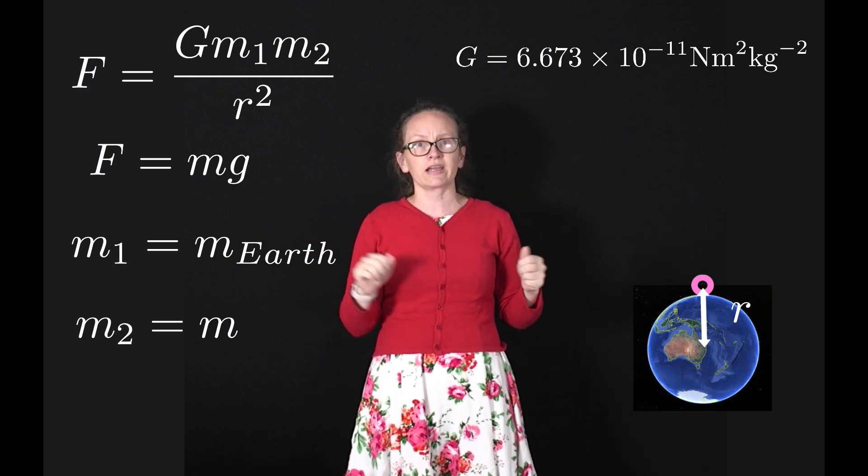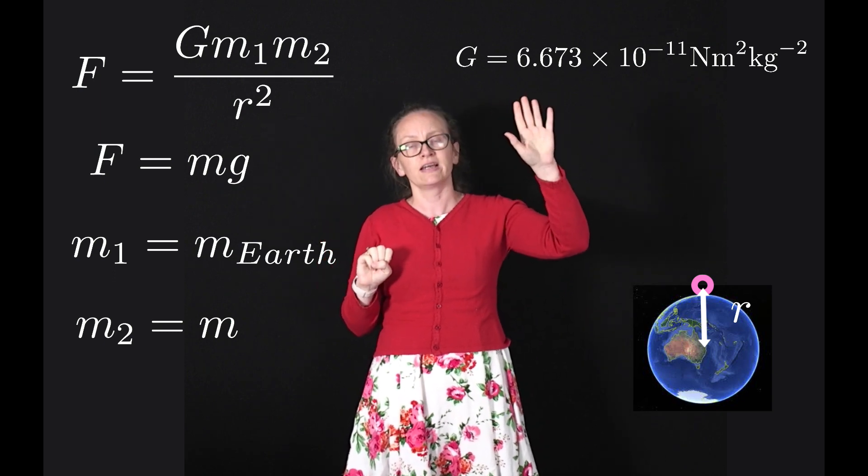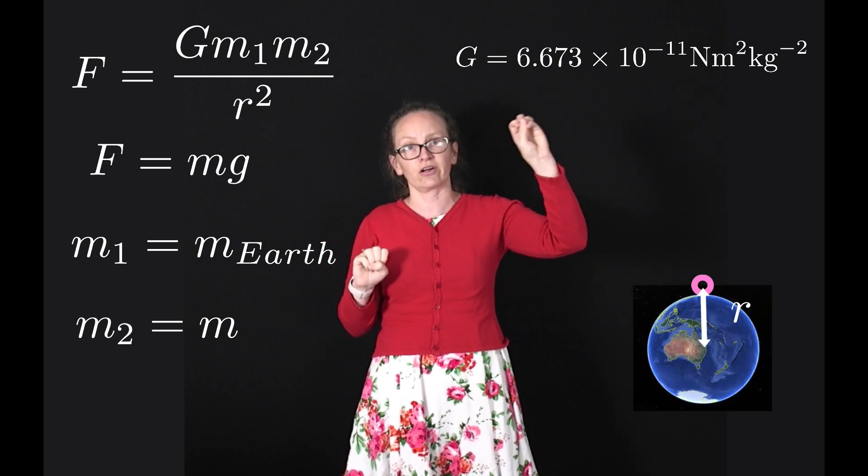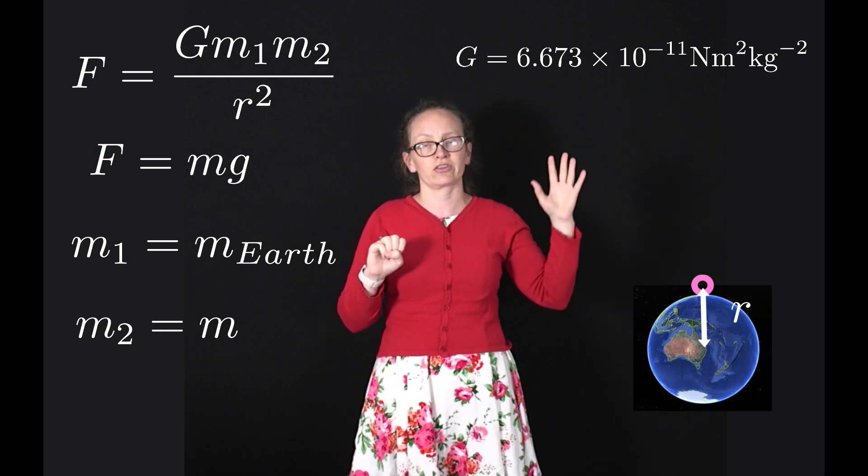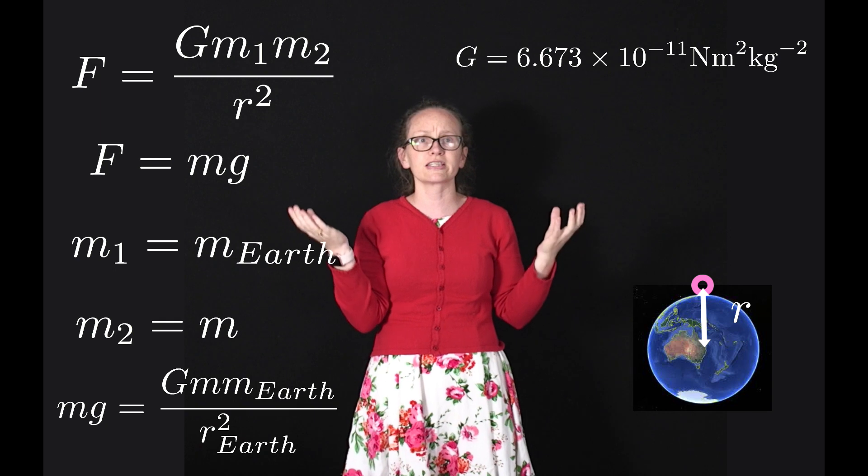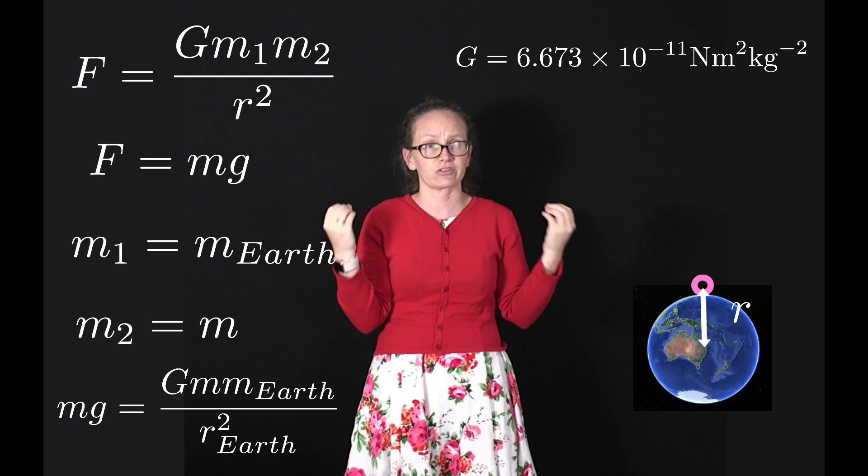So we can write mg equals G times the mass of the Earth times m divided by the radius of the Earth squared. You can see that m, which is the mass of the object we're considering, cancels out in this case.